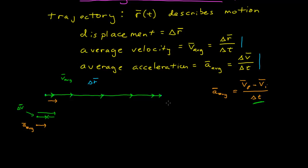If we call this the positive x direction, the acceleration is in the positive x direction. Now let's go to the next two velocity vectors. The second velocity vector is longer and points in the positive x direction. I subtract the previous velocity vector by adding it in the opposite direction. The result goes from the tail of one to the head of the other, pointing in that direction. So in the region of these two velocity vectors, we have an acceleration in the positive x direction.